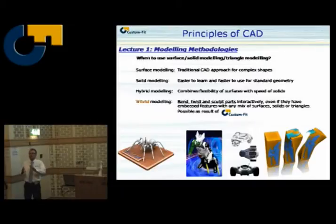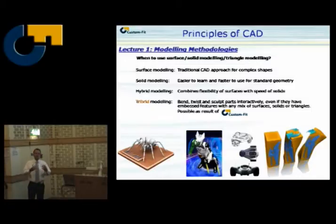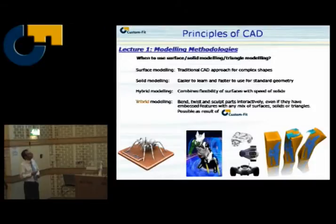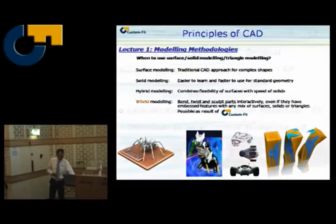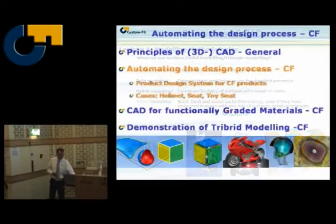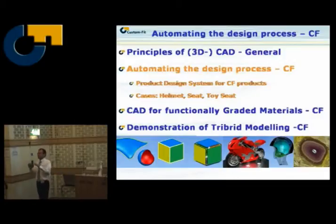We've discussed surface modeling and solid modeling. There's also hybrid modeling, where you use the flexibility and speed of both surfaces and solids. There's also something new called tribrid modeling, developed in this Custom Fit project, where we can use triangles, surfaces, and solids all together. So we're spending a lot of money in this project making nice machines for web manufacturing, but also developing new software that gives us an enormous number of possibilities to create surfaces and geometries. That was a brief overview of 3D CAD principles and what's new coming from this project.